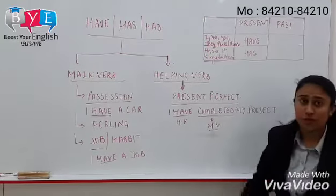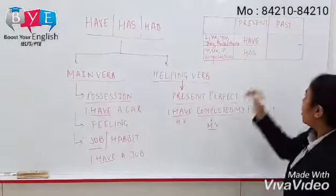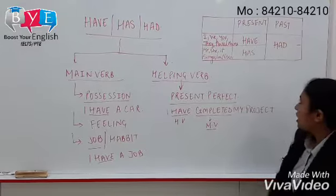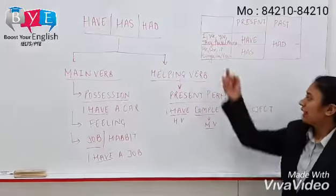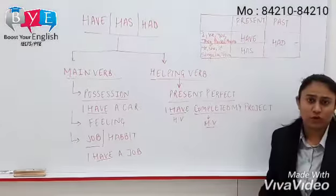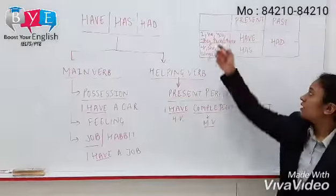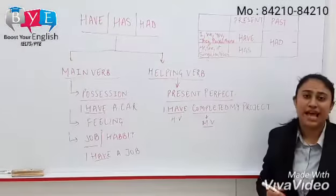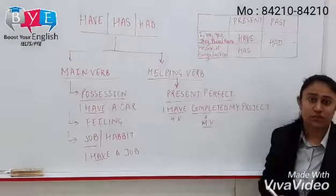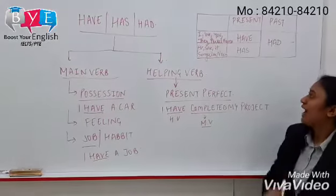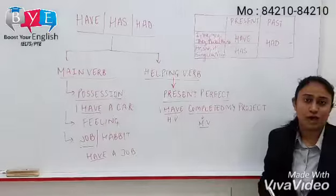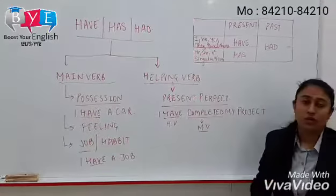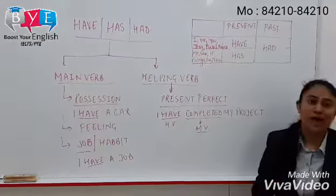And when we are talking about the past, use verb 'had', no matter what the subject is. Now let's take some examples. Like: 'I have done my work.' With subject 'I', we have used verb 'have'. 'He has gone to market.' With subject 'he', we have used verb 'has'.